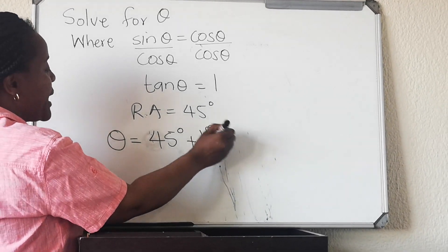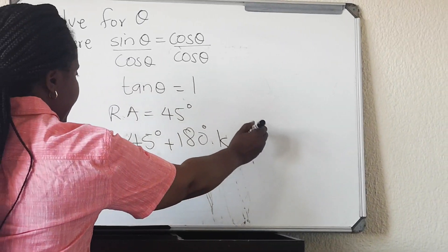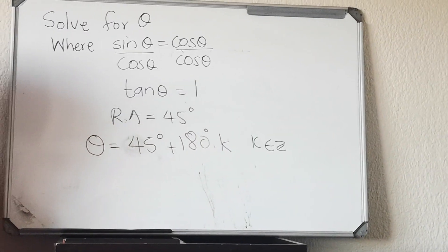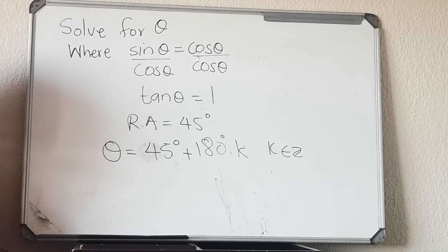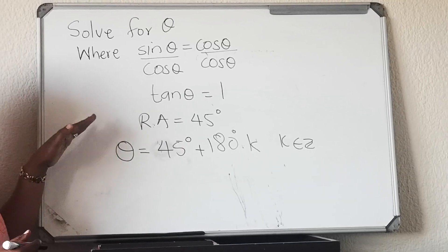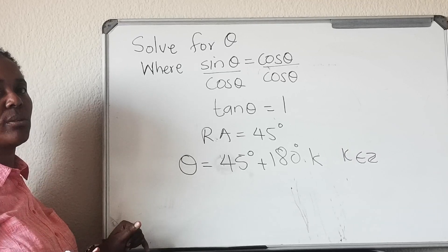Plus 180k. And you also need to add that k is an element of integers. Then this is your general solution, this is your answer. It's done. This is the end of this lesson. We're gonna do other videos for the other different kinds of general solutions. Thank you for watching.